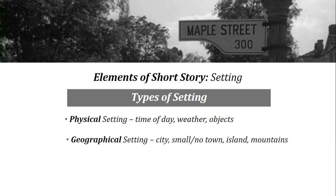Geographical setting can change the direction that a story takes and also what happens to the characters. There's a big difference between a group of characters being lost in an isolated jungle and being lost in the mall. Problems that characters face when a story's events happen at the beach are different from if those events took place in the Rocky Mountains.